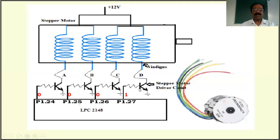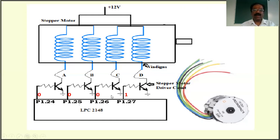Then energize the last winding by making P1.27 high. Once this transistor becomes closed there is a closed circuit, and current flows through winding D. It's going to create a magnetic flux around the coil, creating torque — a twisting force — and rotating the motor by 1.8 degrees. Energizing in this sequence, as per my circuit example, is going to rotate the motor in the anti-clockwise direction.